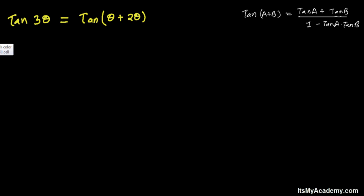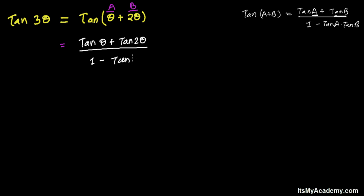We're going to apply that trick here, supposing theta as a and 2 theta as b. So we get: tan(theta) plus tan(2 theta), divided by 1 minus tan(theta) times tan(2 theta). Now we apply the formula for tan(2 theta).